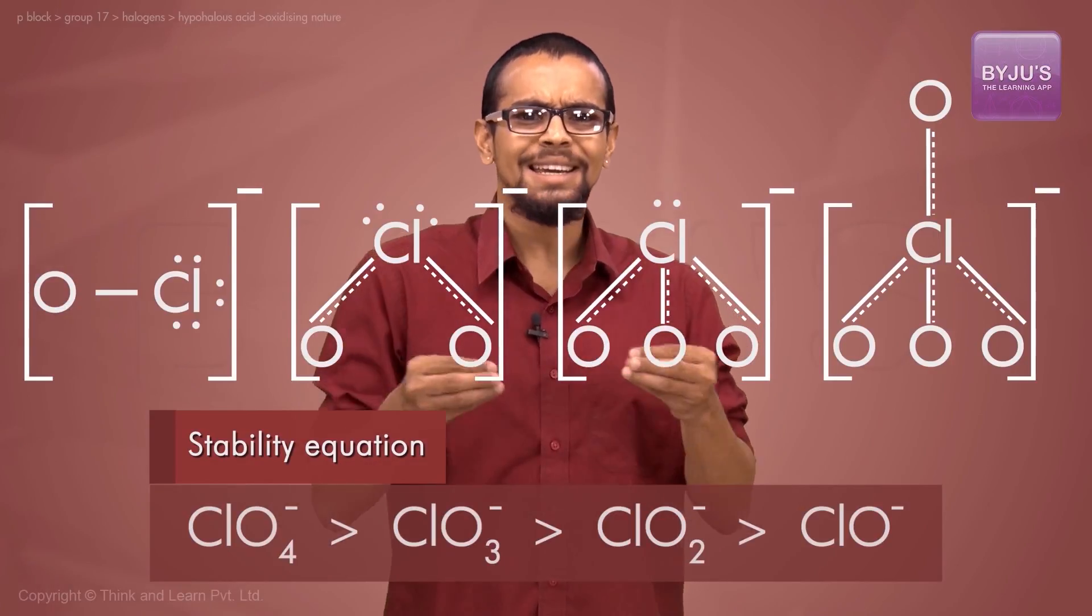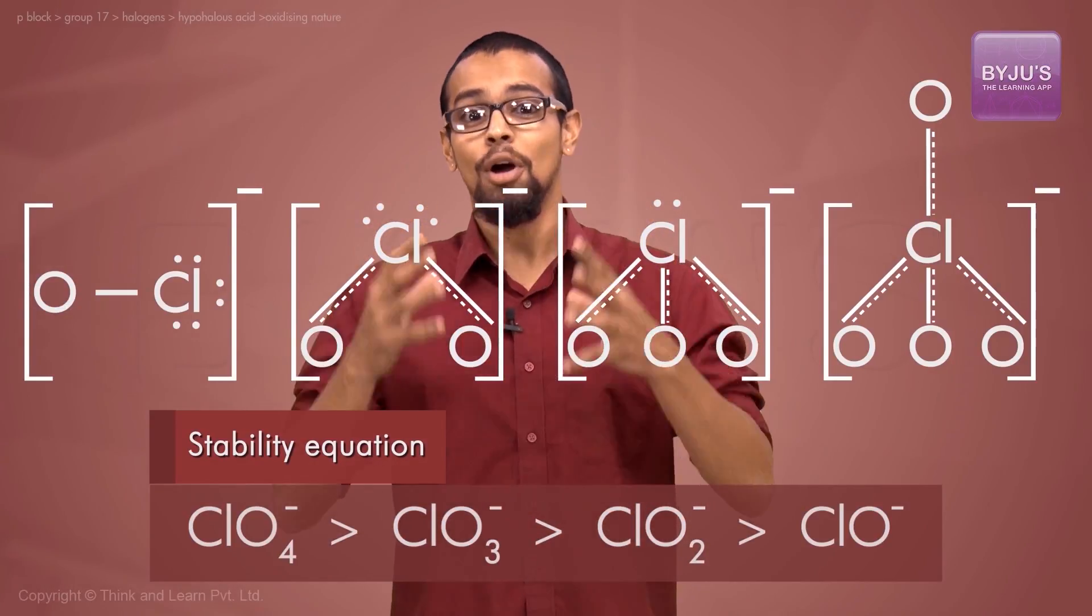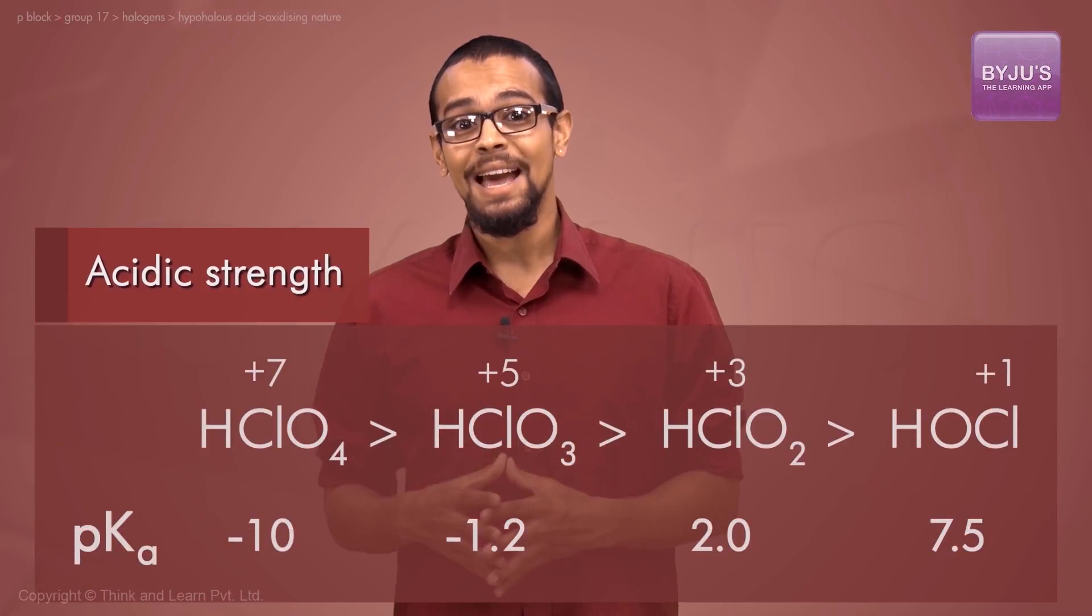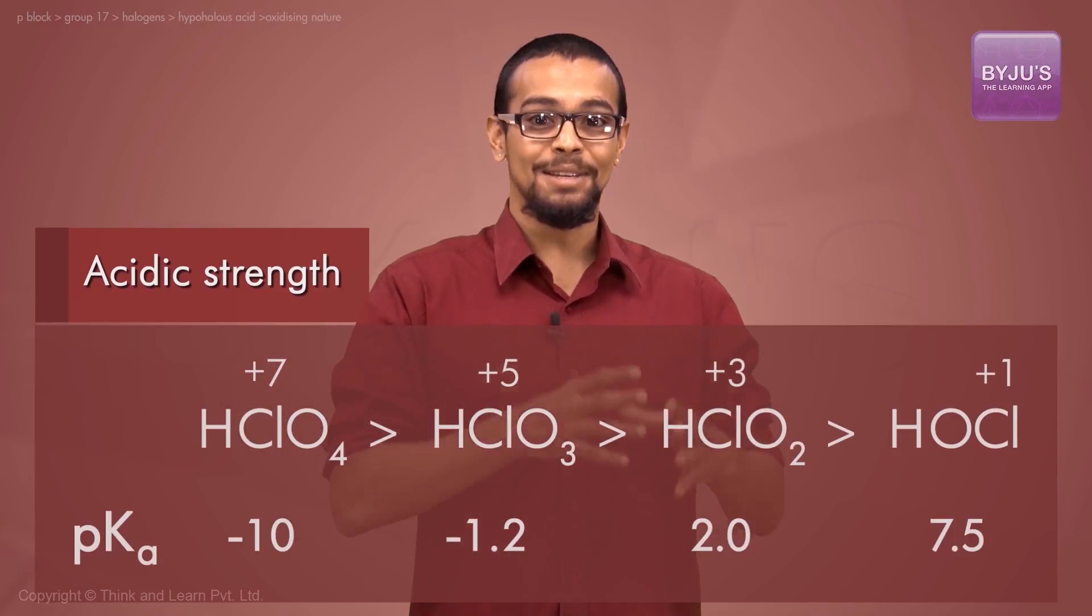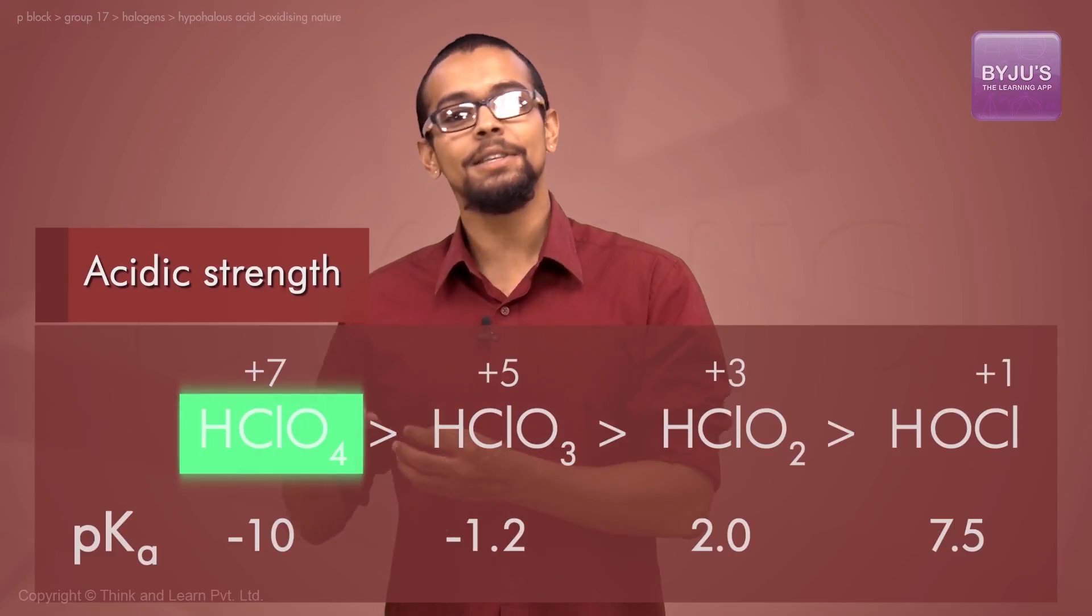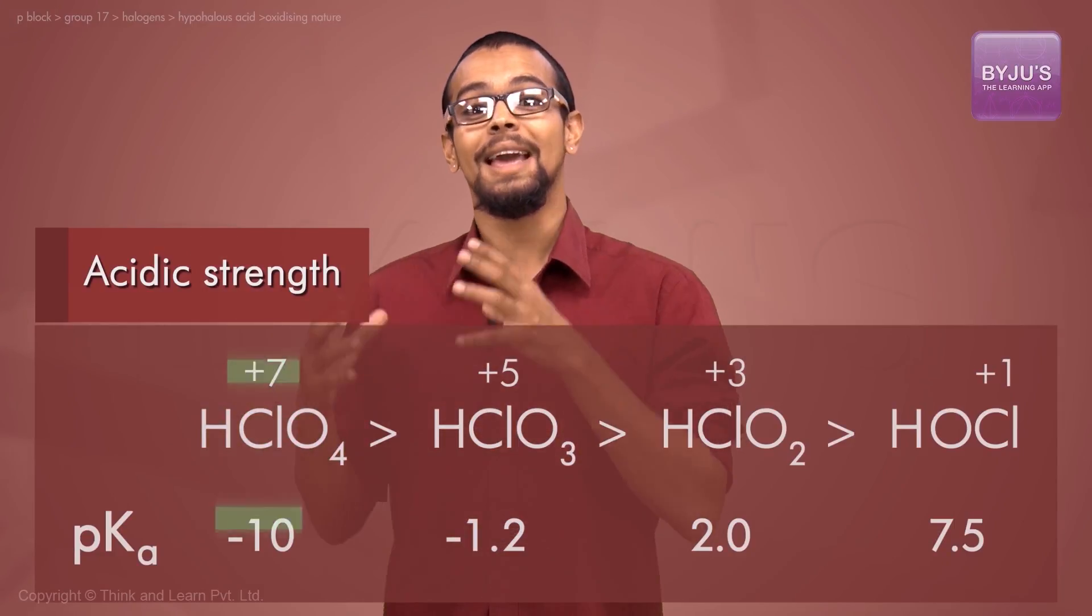Therefore, the acidic character of these acids decreases in a similar order. Where the halogen is present with a greater oxidation number, the acid strength is greater. Where the oxidation number is lesser, the acid strength is lesser.